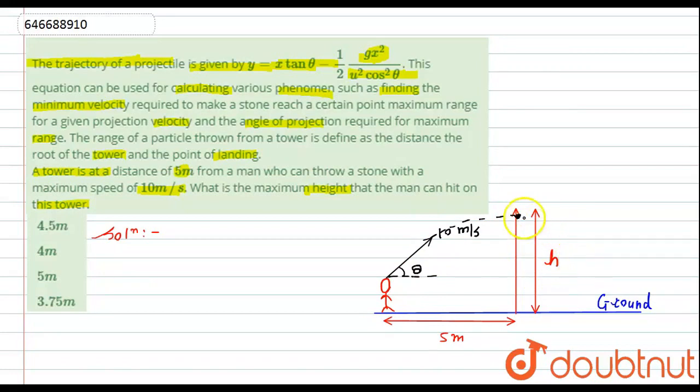According to the question, we have to find this height h. If we see here, according to the question, we have given the trajectory equation. Generally to find this we will use this equation. Here, y is nothing but the maximum height up to that stone is reaching.